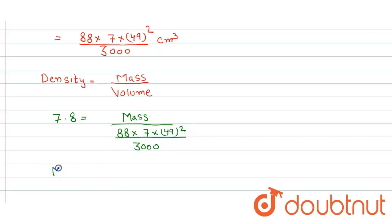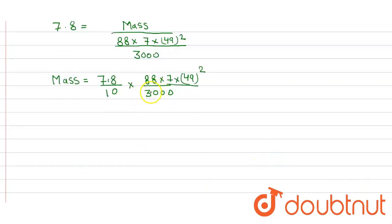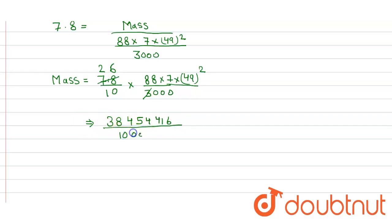So when we further solve it, we get mass is equal to 7.8 into 88 into 7 into 49 squared divided by 3000. This 3 will cancel, and when we multiply we get 3845.4416 divided by 10000. So we just get the answer 3845.4416 grams, and that's our answer.